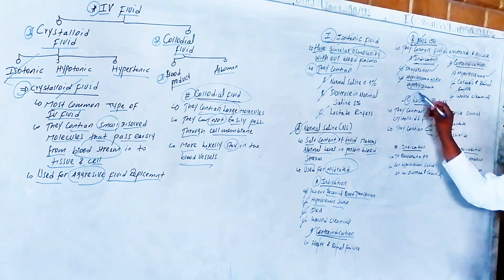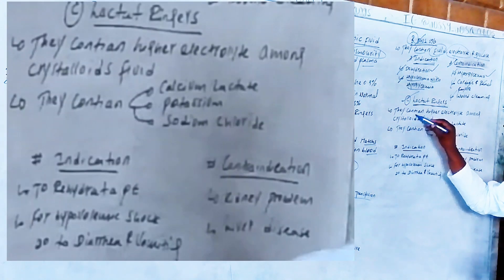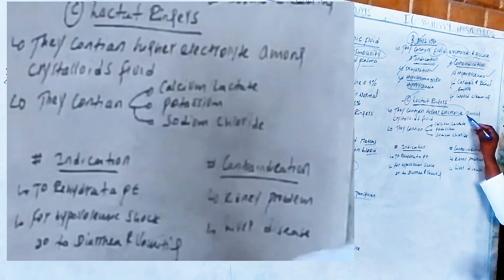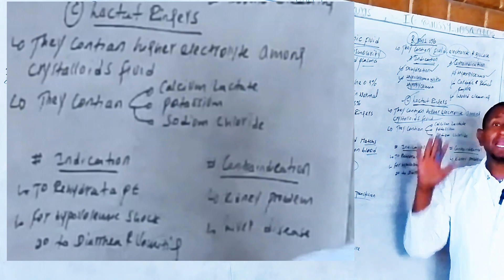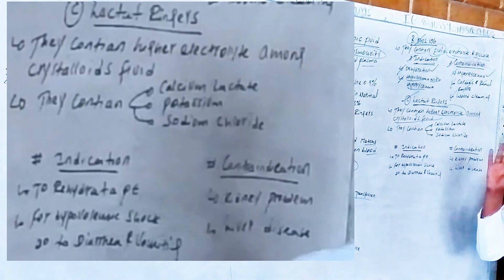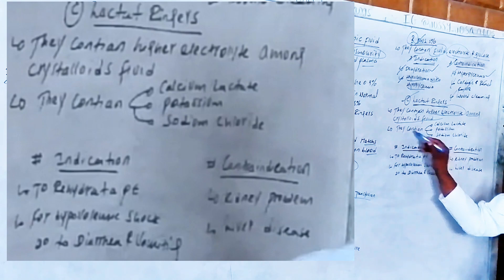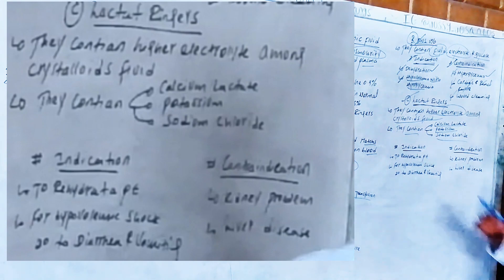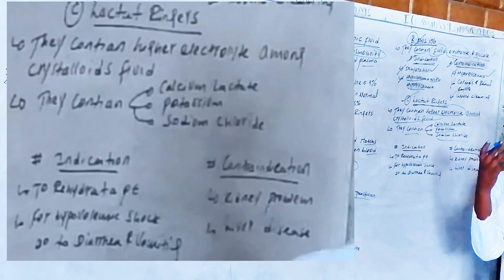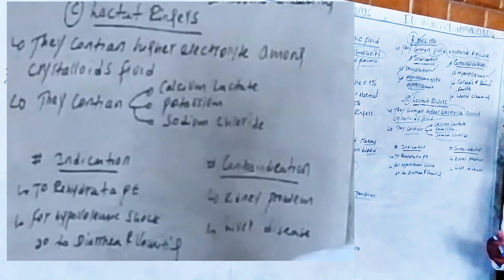The third isotonic fluid is lactated Ringer's, also called Ringer's lactate. It contains the highest electrolyte content among crystalloid fluids, including calcium, lactate, potassium, and sodium chloride. Ringer's lactate is considered the best electrolyte fluid compared to others.